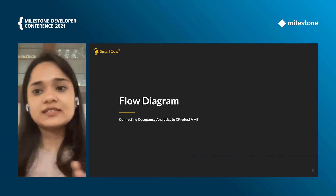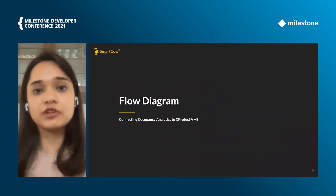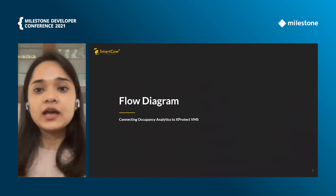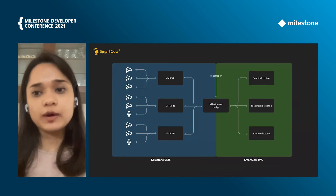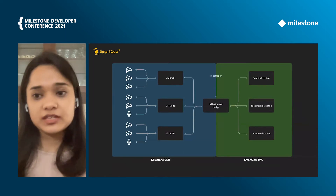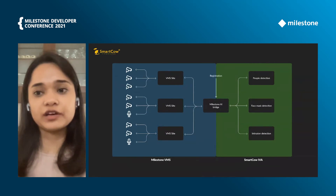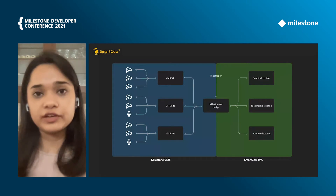Now let's look at a simple flow diagram showing how the AI Bridge connects with the people detection, face mask detection, and intrusion detection from our occupancy analytics. The process we followed is pretty simple. The AI Bridge is provided as a Docker container for installation, so all you need is to run that container. We then configured our video analytics app in the VMS Bridge GraphQL file based on the variables found in the registration file, which is a .env file. All you need to do is make sure to set the Kafka topics and partitions according to your video analytics app.